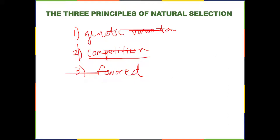Natural selection is not a guarantee — it does tend to lead to adaptation, but in evolution there's a lot of extinction. There are many cases where something in the environment changes and nobody's favored, and everybody dies. Extinction is much more common than adaptation. But when adaptation happens, it follows this three-step process.